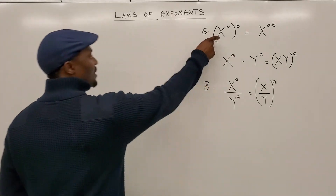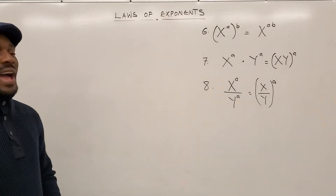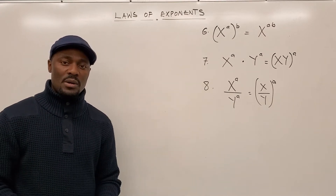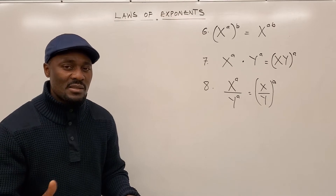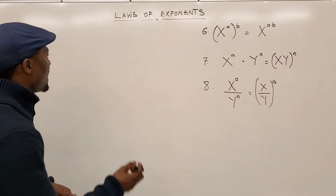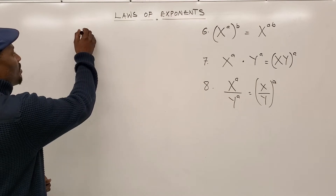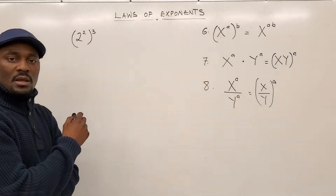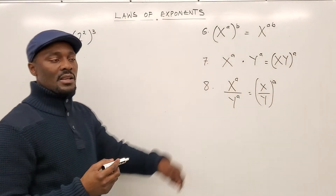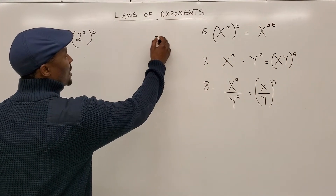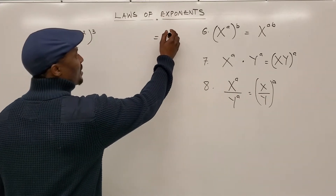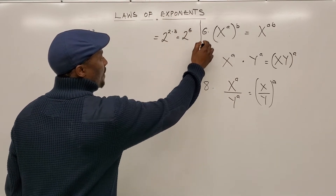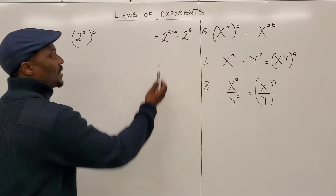We're going to apply rule number six. What you have is a number written as an exponent and then raised to another power. Let's take an example: 2 to the power of 2, then raised to the power of 3. This law says the answer is simply 2 to the power of 2 times 3 — 2 multiplied by 3 — so that should be 2 to the power of 6.